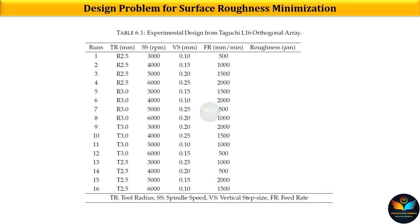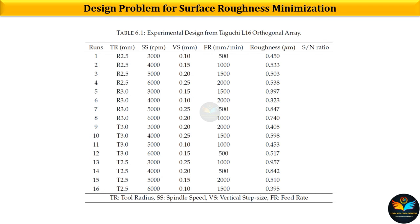Based on the experimental design, we have to conduct 16 experiments — and sometimes repeat an experiment if something goes wrong, but that is not necessary. Once the experiments are done, we measure the surface roughness and place the values into the experimental design. Eventually we get the surface roughness values from the experiments and will open Minitab again to construct the Taguchi design problem.